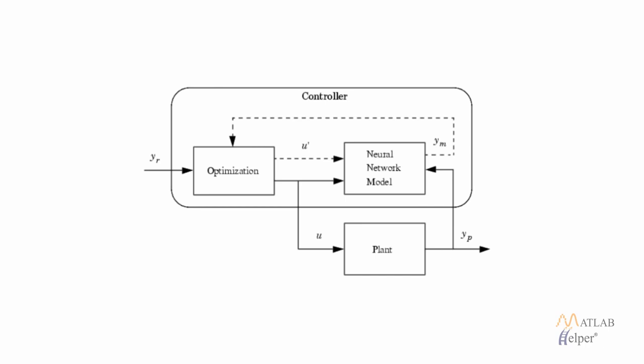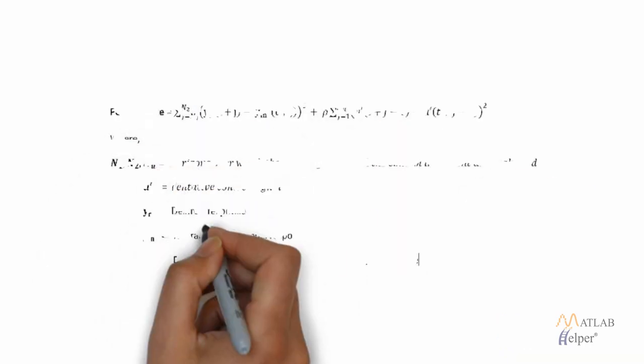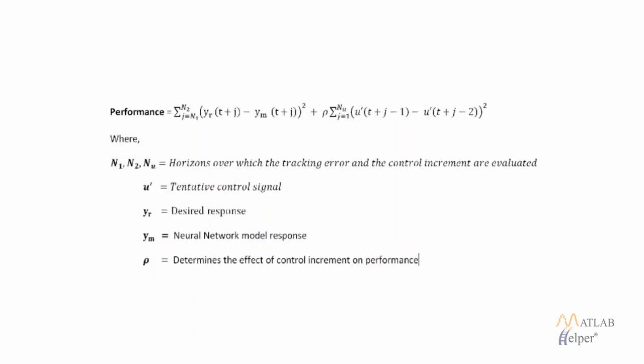The optimization of the controller requires a significant amount of online computation time because the optimization is performed at each single time step to compute the optimal control input. The optimization block tries to minimize the performance function shown in the equation on the screen. The first term is basically the difference between the required signal and the signal predicted by the neural network model, and the second term represents the sum of squares of the control increment values.